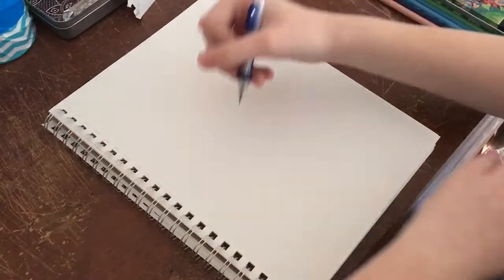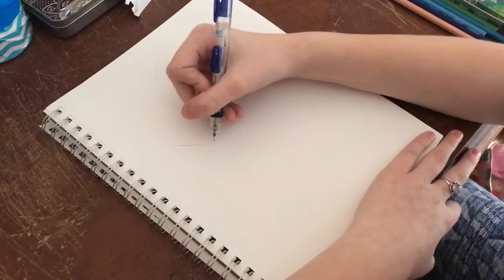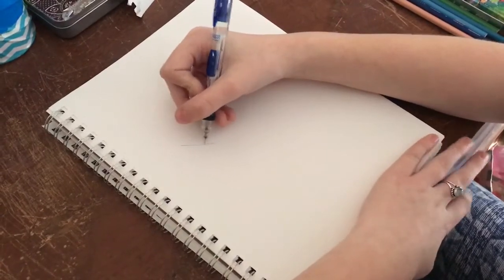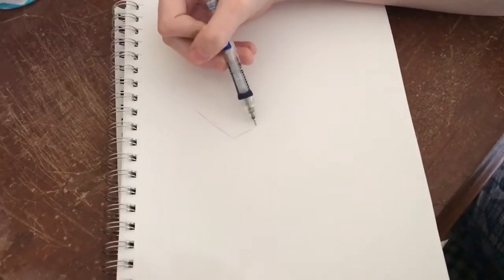Alright, now time to draw. So first, for the first part, you'll need to draw a big V. Just do that. Make sure to make that light, or else the pencil lines will show through and you don't want that.